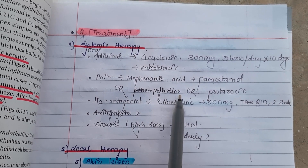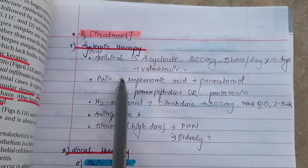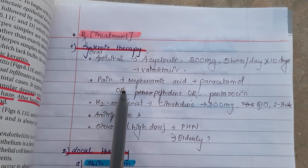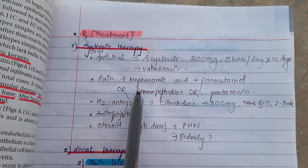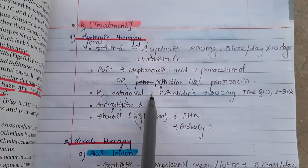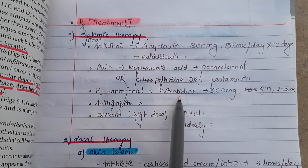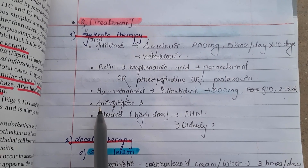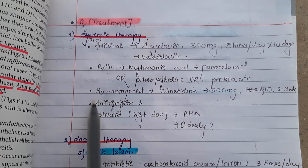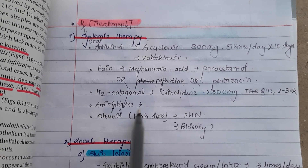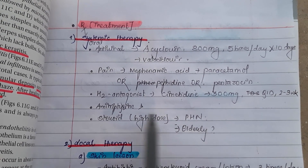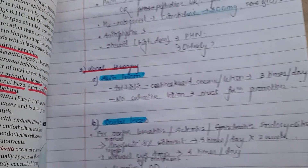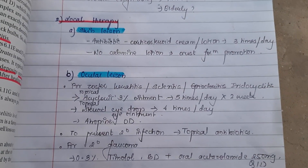For pain management, mefenamic acid or paracetamol can be given, or pethidine in severe cases. Pain in the first two weeks of disease is very severe. To reduce pain and pruritus, an H2 antagonist — cimetidine 300 mg QID for two to three weeks — can be given. Since pain can cause depression, amitriptyline may be given. High-dose steroids can be used to prevent post-herpetic neuralgia, but high-dose steroid use in the elderly should be carefully considered.